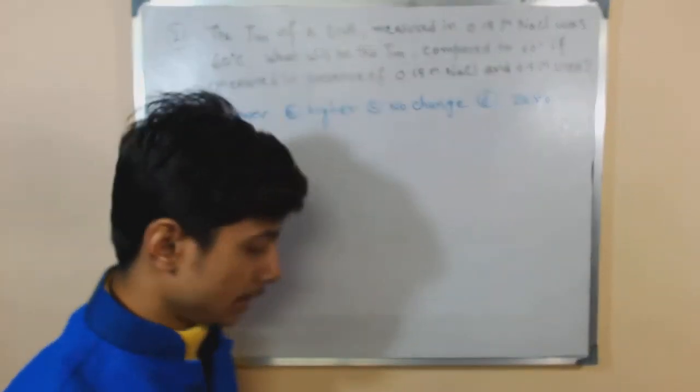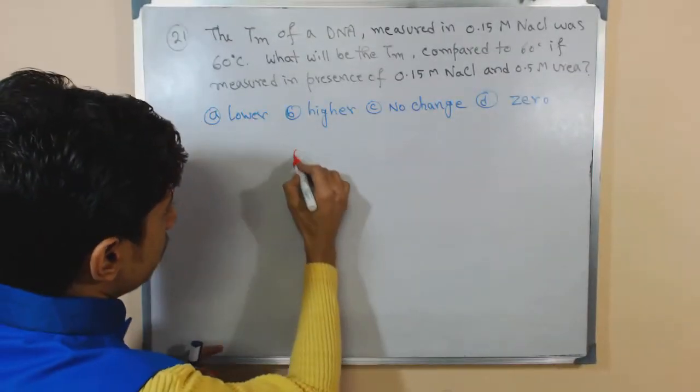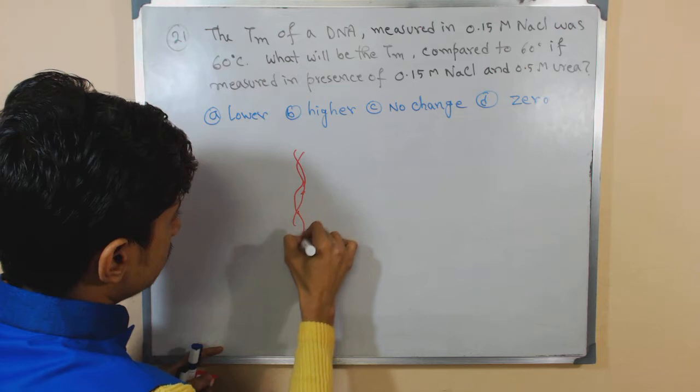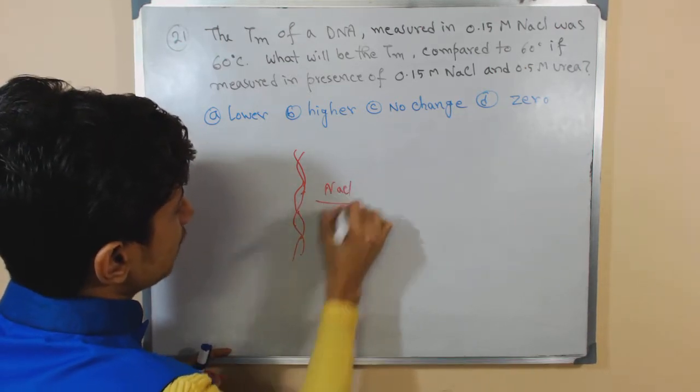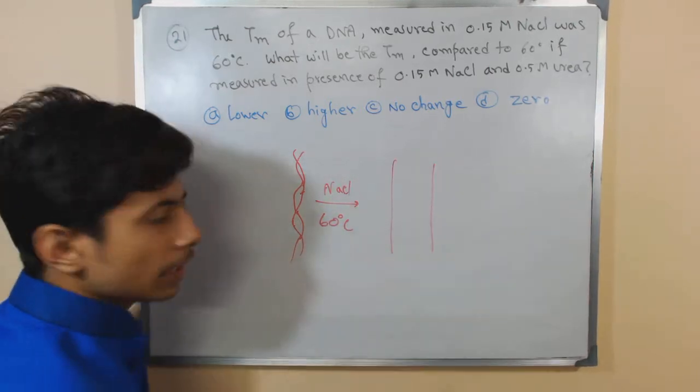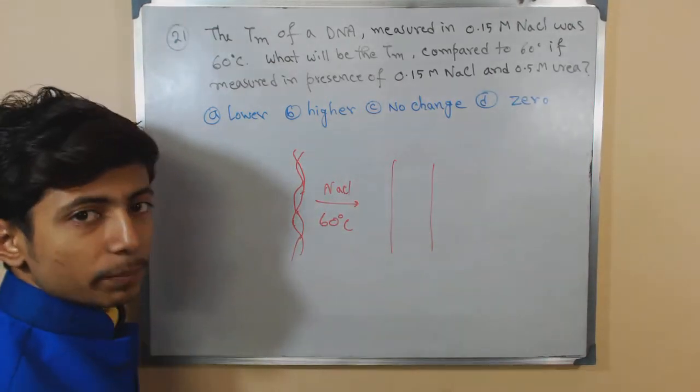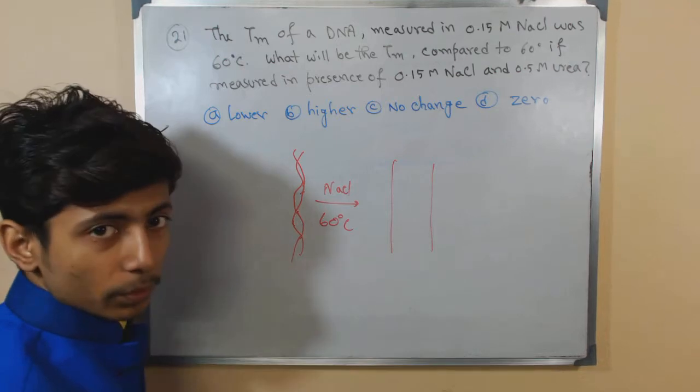Now try to imagine we are having DNA. Let me draw it like that. DNA. In 60 degree Celsius temperature in presence of NaCl, that DNA completely destabilizes and two strands completely separated. That is the scenario.